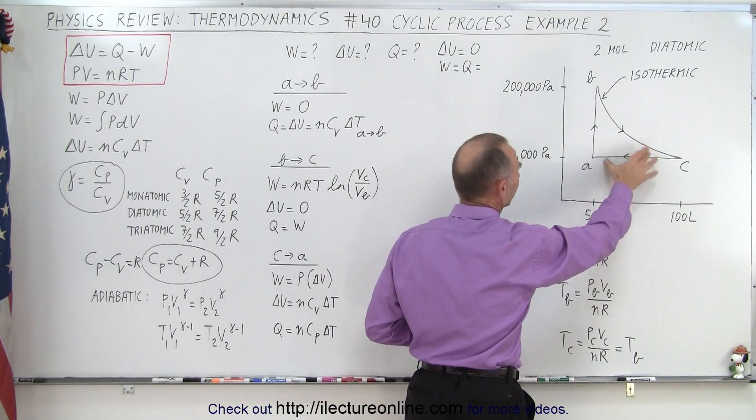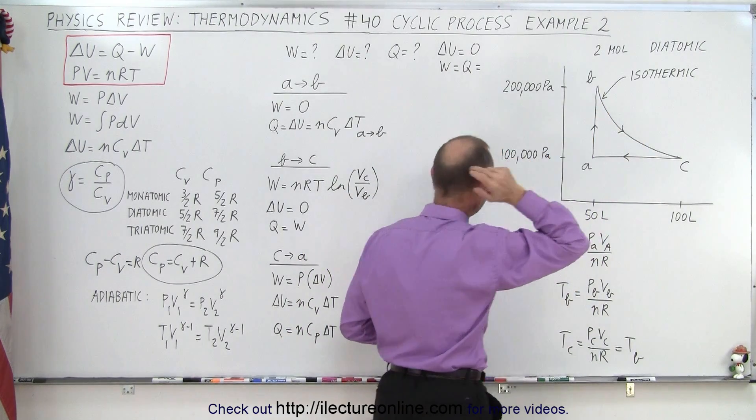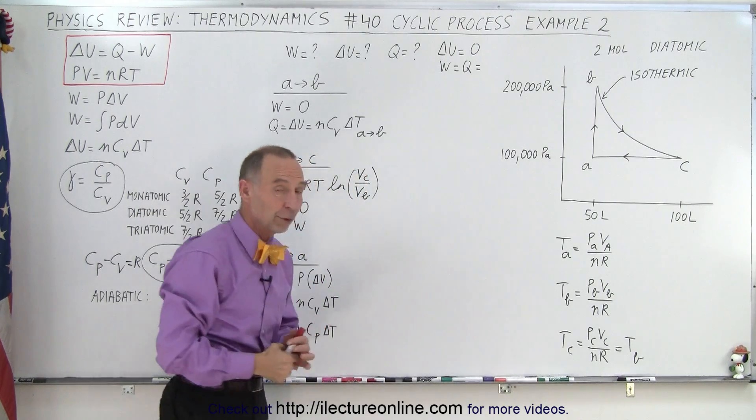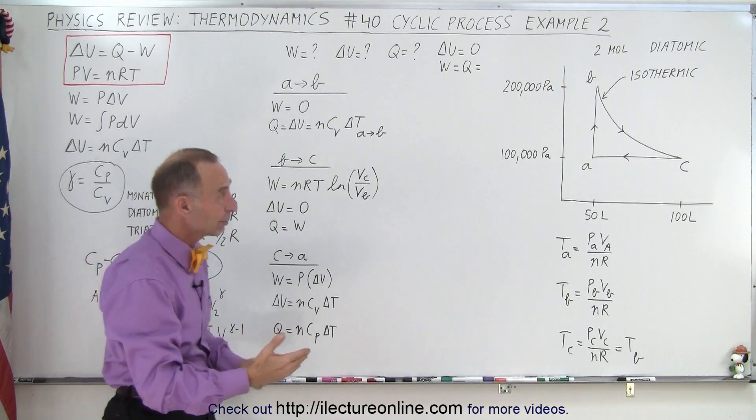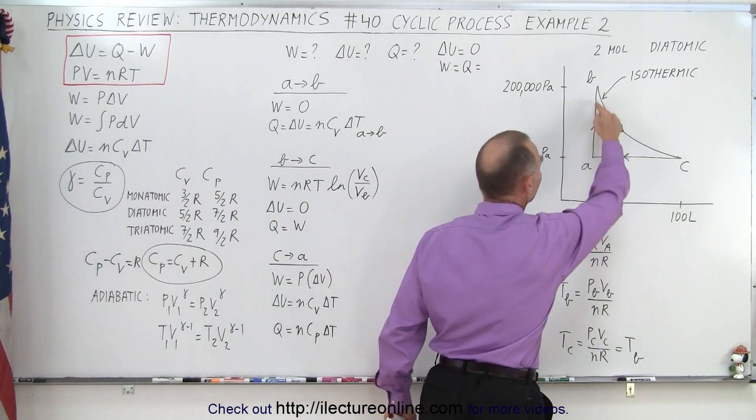This is what we call an isobaric process, and this is an isovolumetric process. So together, all three form a cyclic process, and the work done by this process equals the area inside.